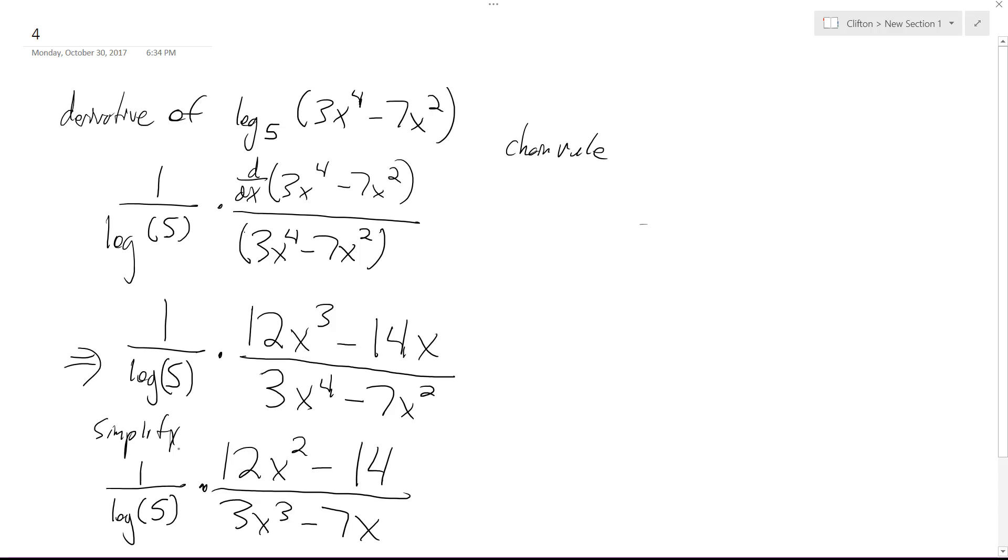Finally what I end up here with is this whole quantity. So this is the log of the base, and what I did is I finally canceled out a common term out of all these, which is just an x. So that's how I get the 12x squared minus 14 on top over 3x cubed minus 7x.